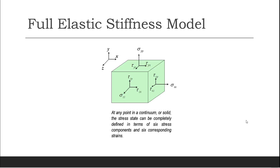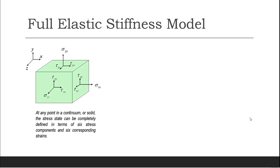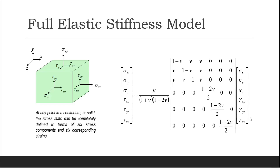If we look at the full elastic stiffness model of any material, there are three axial strains or stresses and three shear stresses and shear strains. We are dealing with a full six-by-six matrix — six strains and six stresses — with 36 possible relationships. Some relationships are valid, some are zero, and some involve Poisson's ratio, meaning certain strains are dependent on other components. A single modulus is therefore not sufficient for understanding material behavior in all directions, which is why we have both shear modulus and elastic modulus.